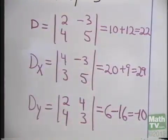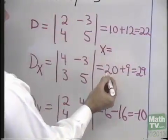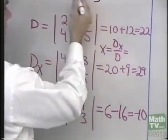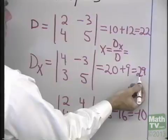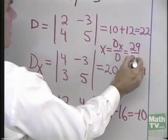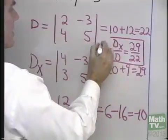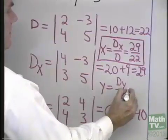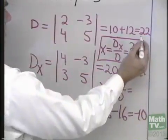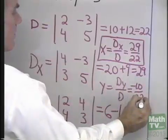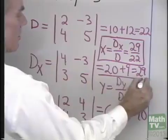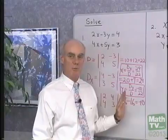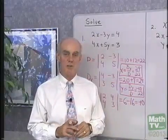To solve my system, x — the x-coordinate of the solution — will be D sub x divided by D. D sub x is 29 and D is 22, so I have 29 divided by 22. That's the x-coordinate of my point of intersection. Y is equal to D sub y divided by D, and that will be negative 10 divided by 22, which is negative 5 over 11 in lowest terms. What I do is simply form these determinants — it's a very mechanical process to solve a system of equations by determinants.